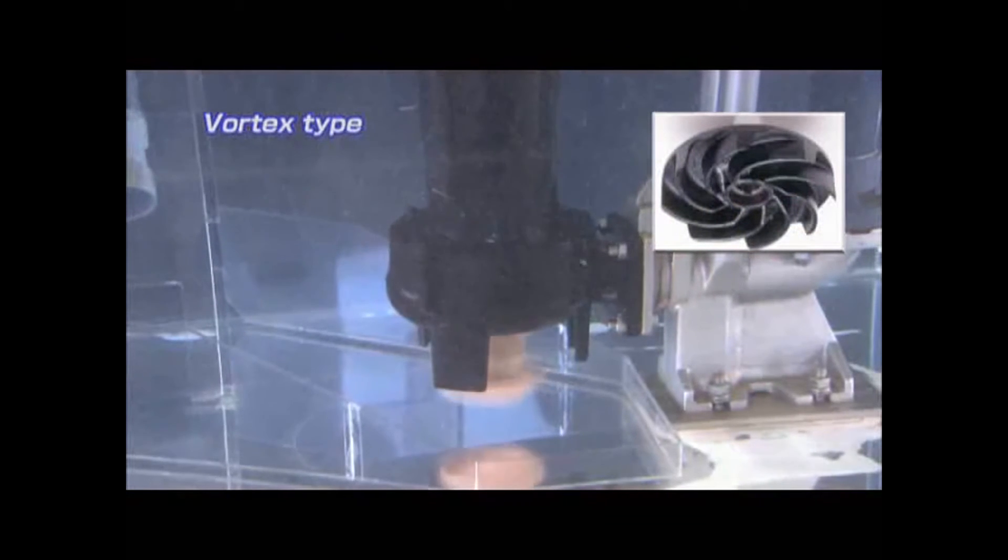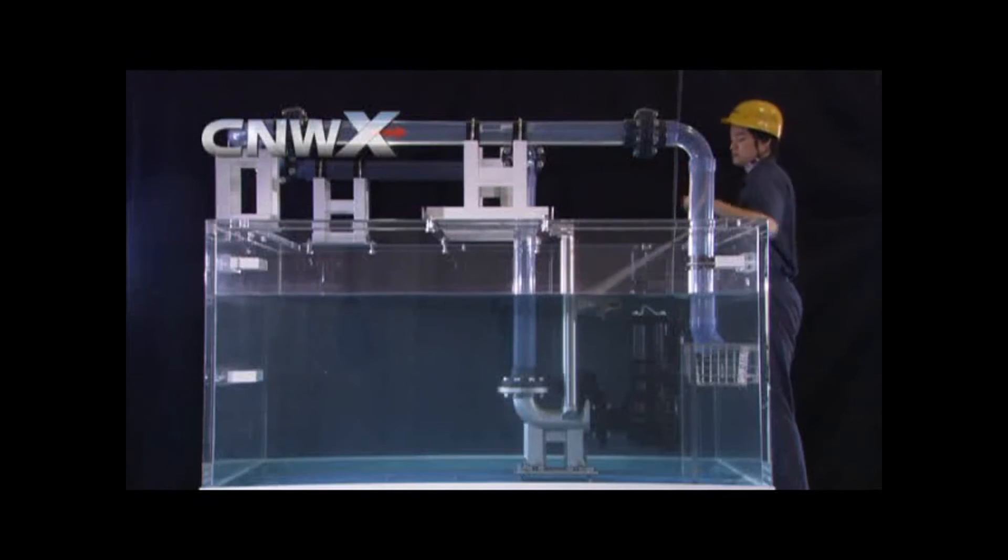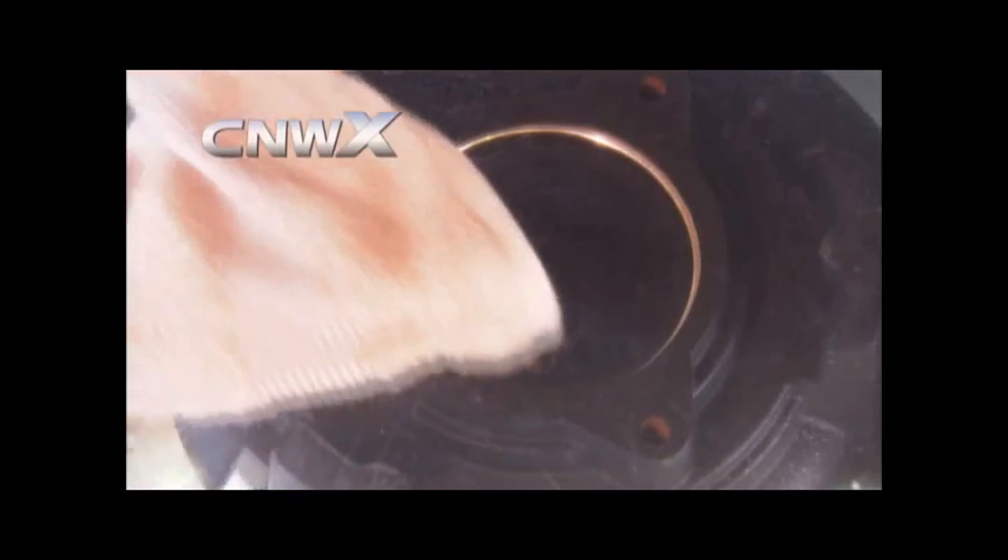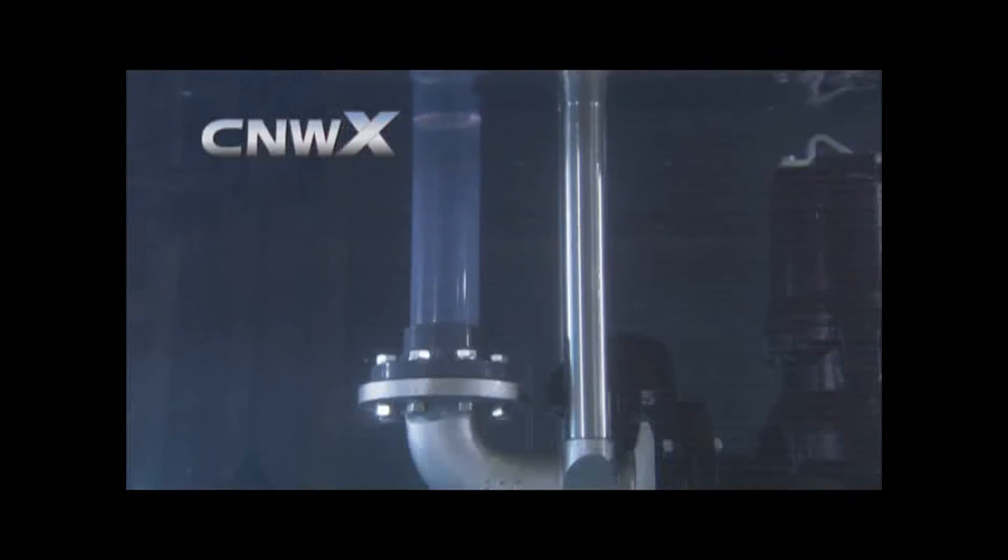Clogging occurs with the conventional vortex type pump. What do you think will happen in the case of the non-clogged scroll submersible pump? As you can see here, even an item such as a towel which is liable to become entangled passes through the pump without clogging it.